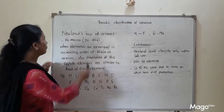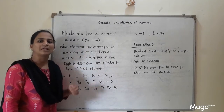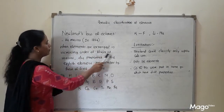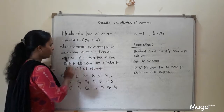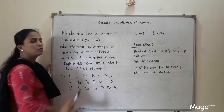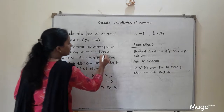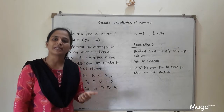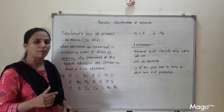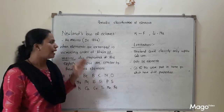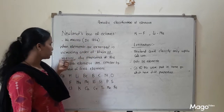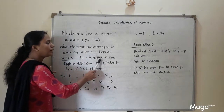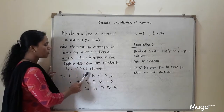After Dobereiner, in 1864, Newland was a scientist who tried to classify all the elements present at that time. So what is Newland's law? When elements are arranged in increasing order of their atomic masses, the properties of the 8th element are similar to that of the first element. As with Dobereiner, Newland's law is also based on atomic masses.